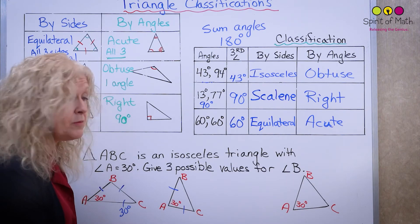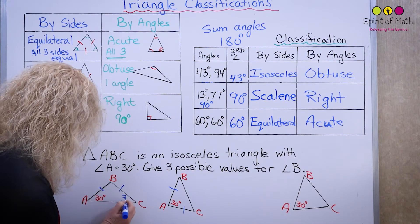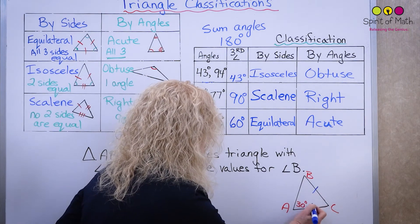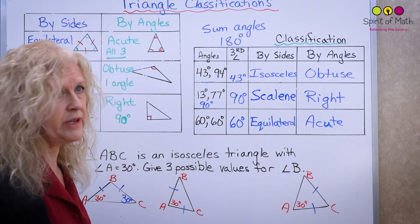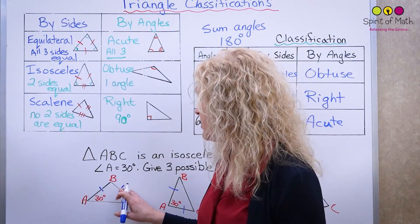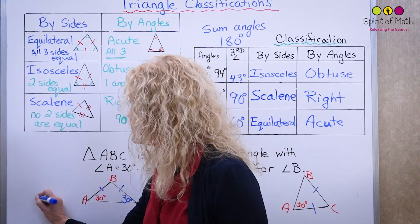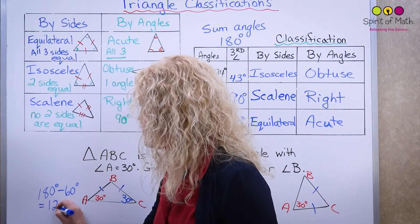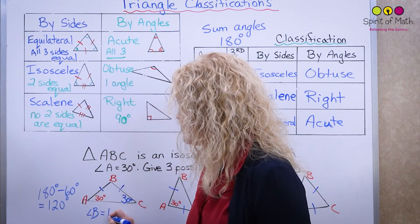Let's go back to the first one. We have two angles but we don't have B yet. We have 30 plus 30, which is 60 degrees. So B equals 180 minus 60 degrees, which is 120 degrees. Angle B equals 120 degrees — there's one value.